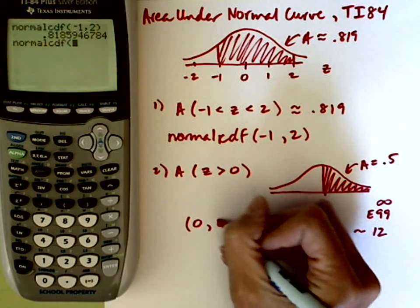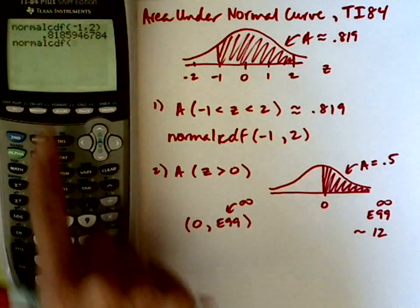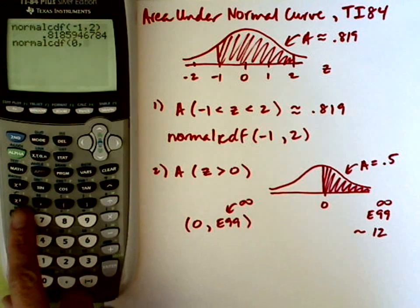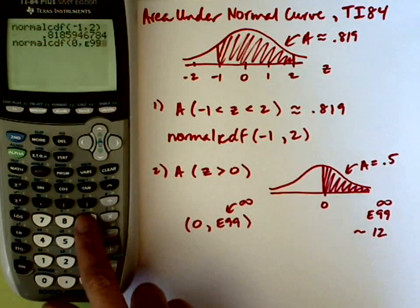So I'm going to go ahead and do e99, so this is roughly infinity. So for normal CDF, I type in 0, to get to the e, I'm going to use the second on the comma key. So second comma key, 99.